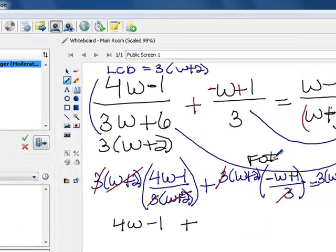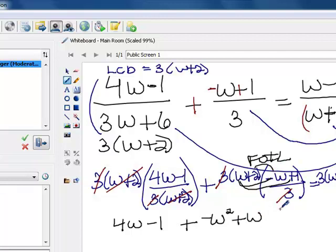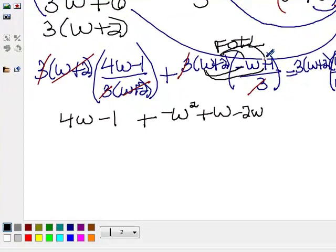So let's do that. W times negative w is negative w squared. W times 1 is w, and 2 times negative w is negative 2w, and 2 times 1 is 2.